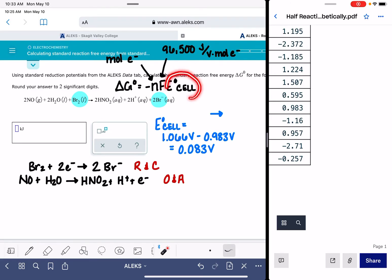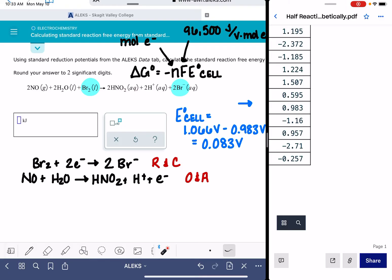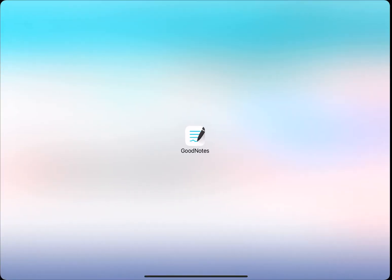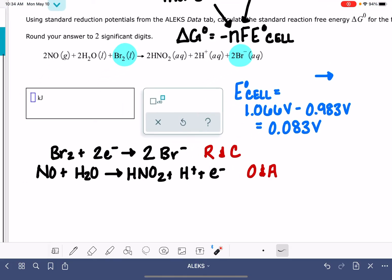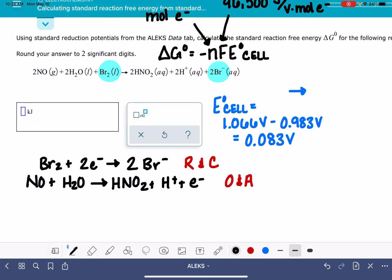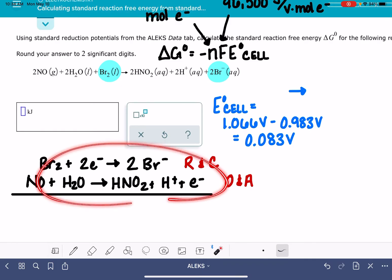F is a constant. So the only other thing we have to figure out is the number of electrons that are being exchanged, the number of moles of electrons that are being exchanged in the overall reaction. So what I did here was copy the half reactions from the table of half reactions. But if we imagine putting these two half reactions together, adding them together the way that we do.